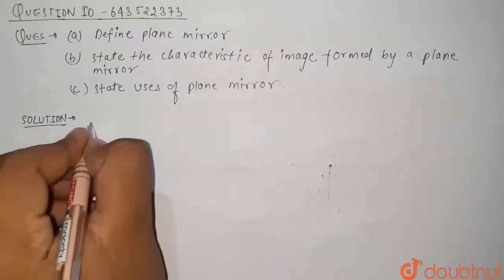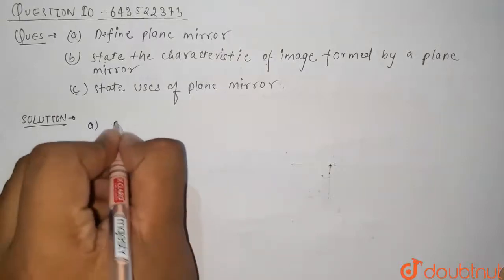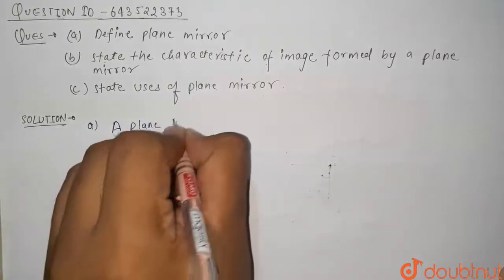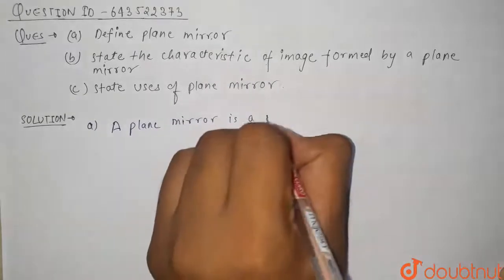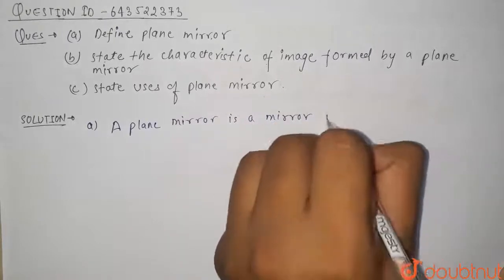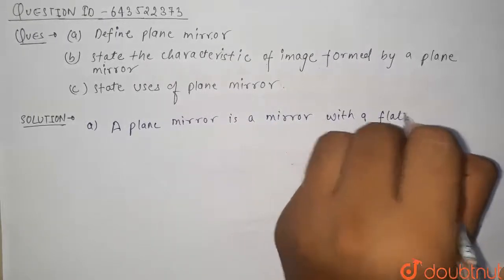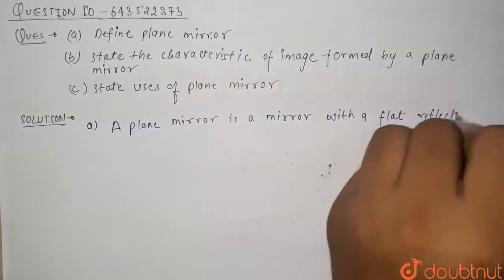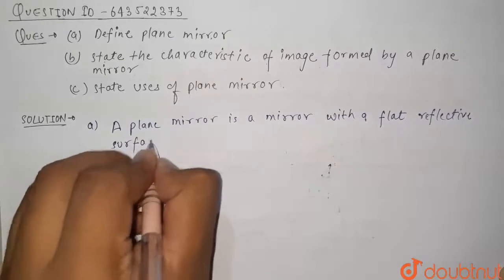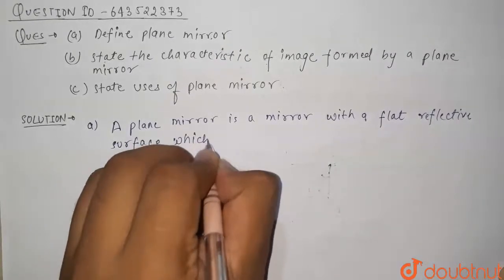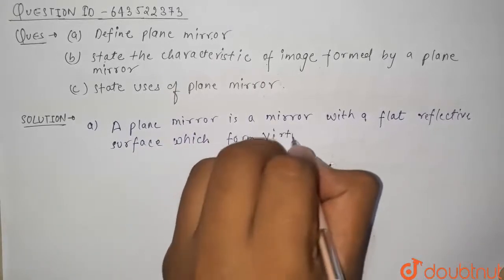Let us firstly consider first that is plane mirror definition. A plane mirror is a mirror with a flat reflecting surface which forms virtual images.